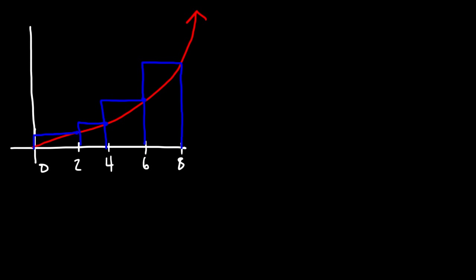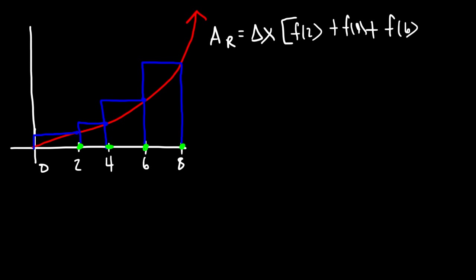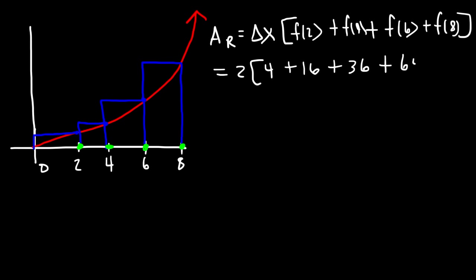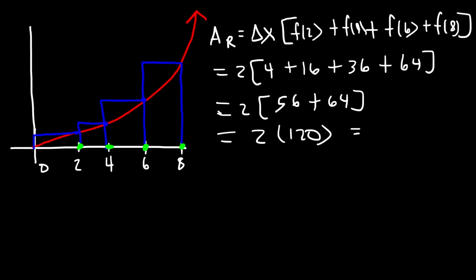For right endpoints, we choose four of the five points starting from the right: 2, 4, 6, and 8 — not 0. The area is delta x times f(2) + f(4) + f(6) + f(8). Delta x is 2; 2² = 4, 4² = 16, 6² = 36, 8² = 64. We know 4 + 16 + 36 = 56, and 56 + 64 = 120. Then 2 × 120 = 240. So the area using right endpoints with n = 4 is 240.